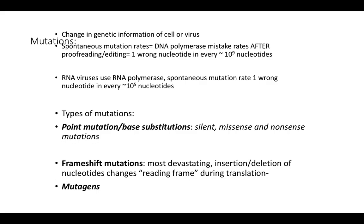Mutations are a change in the genetic information of a cell or a virus. In cellular organisms, there's a spontaneous mutation rate — even though DNA polymerases proofread, they still have a mistake rate of roughly one wrong nucleotide in every 10^9 nucleotides after proofreading. DNA viruses using cellular DNA polymerase would likewise have a pretty low spontaneous mutation rate.